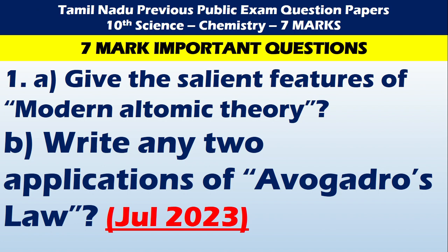First question: give the salient features of modern atomic theory — this is one of the very important questions. Also, write any two applications of Avogadro's law. Please make note that the first question is from July 2023: give the salient features of modern atomic theory, or write any two applications of Avogadro's law, my dear children. Please read these questions accordingly.